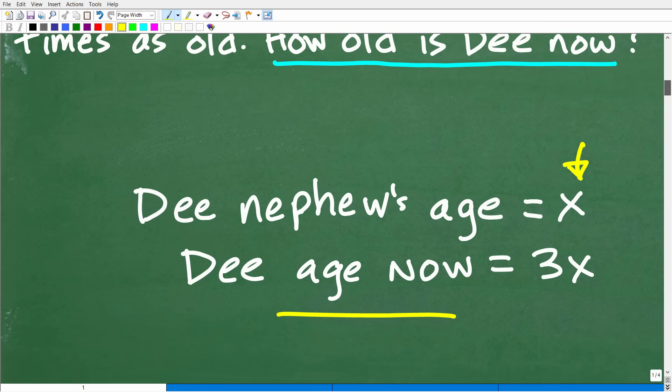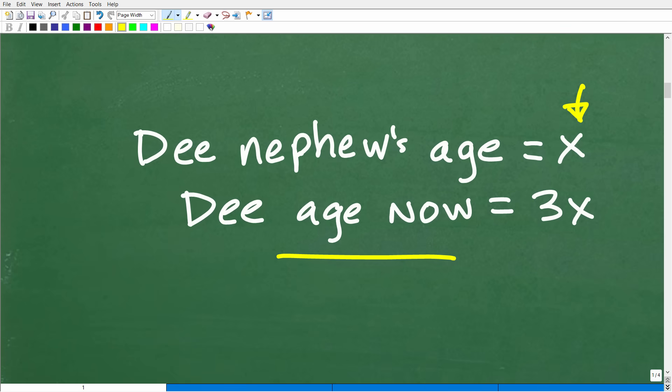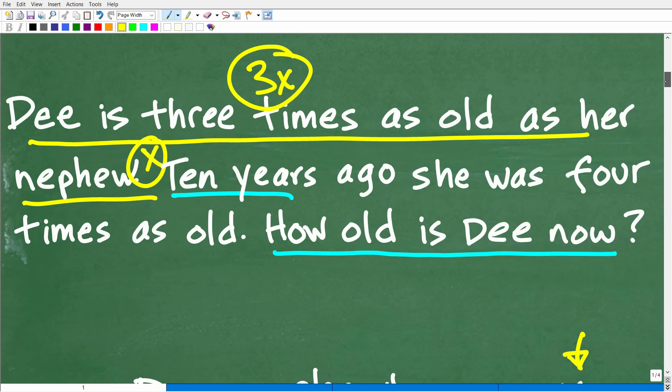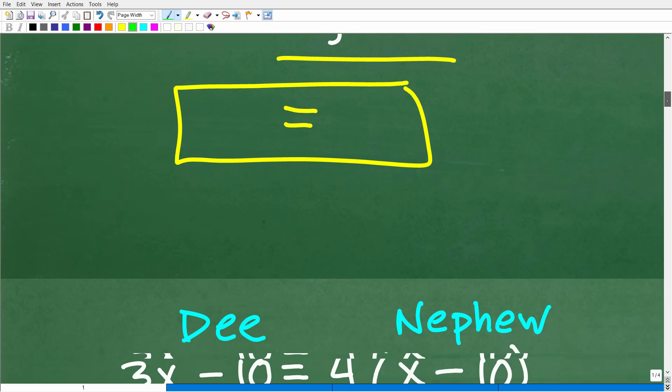Okay, so that is the first part of doing this problem, just assigning a variable. But now that we have some variables assigned, we can't solve for this variable unless we build an equation, okay, an algebraic equation. And again, most algebra word problems work pretty much the same way. So we're going to have to use the rest of this information in the problem to build an equation. And the information that we need to use is this part right here: ten years ago, she was four times as old. Okay, so ten years ago, she was four times as old as her nephew. So let's go ahead and build this equation right now with that information.